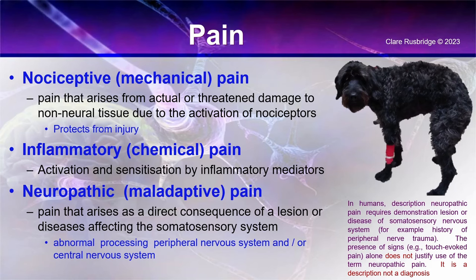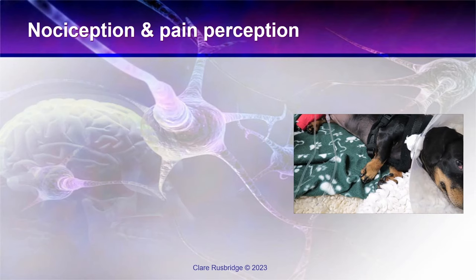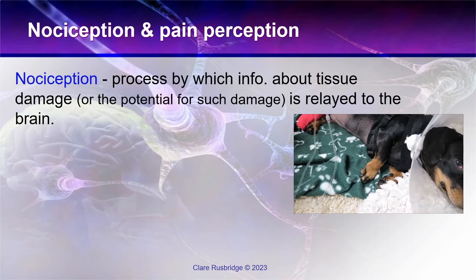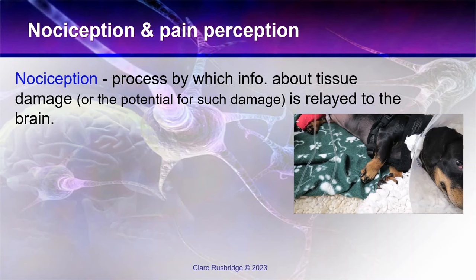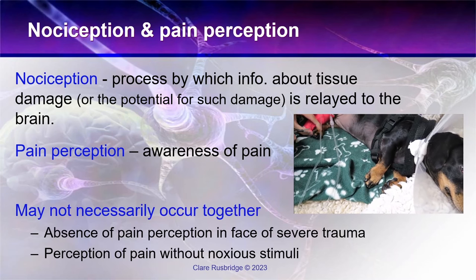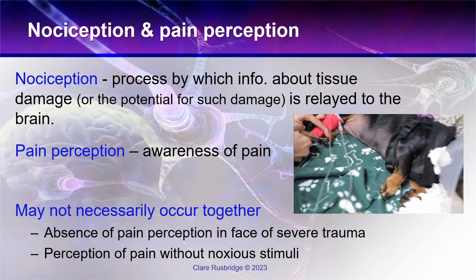Some definitions can cause confusion — for example, the difference between nociception and pain perception. Nociception is the process by which information about tissue damage or potential damage is relayed to the brain. You can have a nociceptive input but not necessarily feel pain, because pain is your perception — your awareness of that being painful. They may not necessarily occur together.